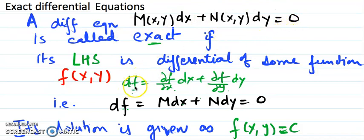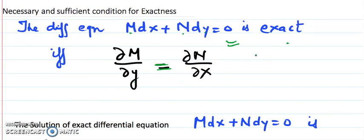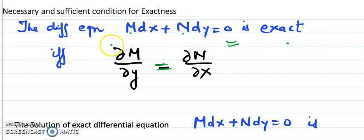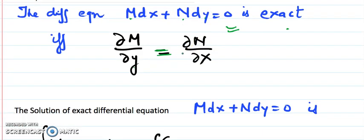Now let us discuss the necessary and sufficient condition. The necessary and sufficient condition for any differential equation to be exact: first, we see every differential equation in the form M dx + N dy = 0. The dx coefficient we call M and the dy coefficient we call N. To check whether it is exact or not, we have to satisfy this condition: take the dx coefficient M and do the partial derivative with respect to y. If that value is exactly equal to the partial derivative of N with respect to x, then the given differential equation is exact. Once this is confirmed, we are in a position to find its solution.